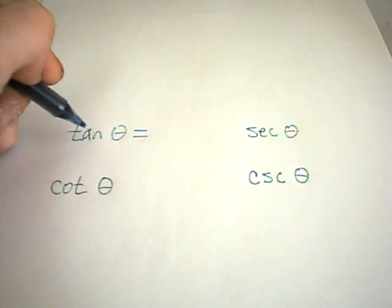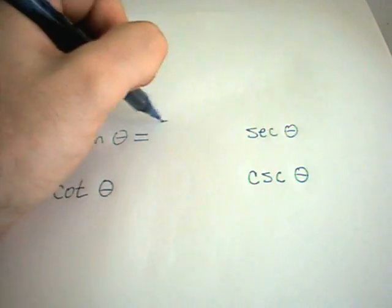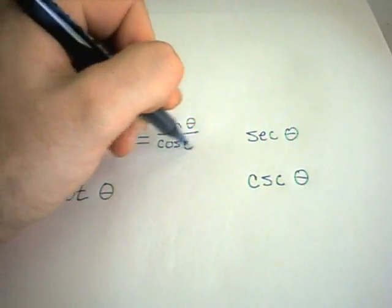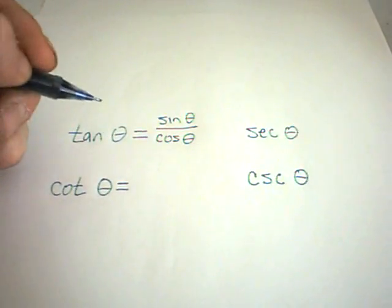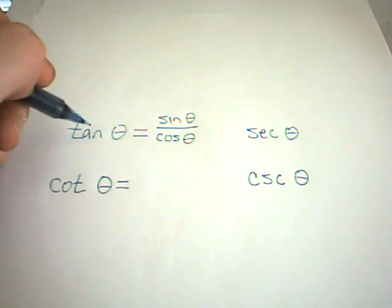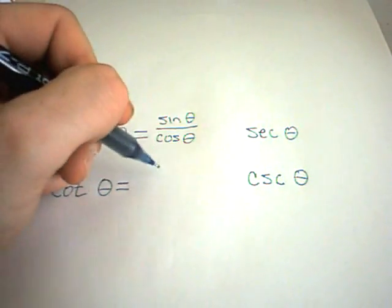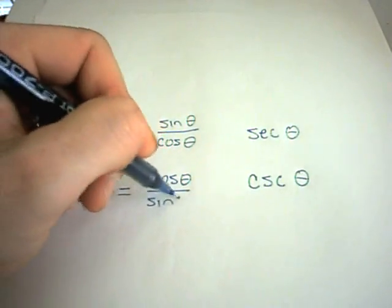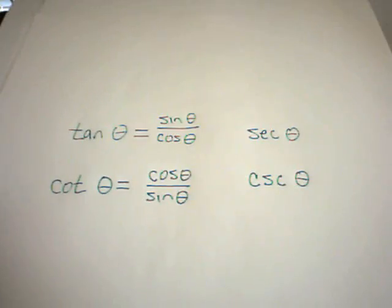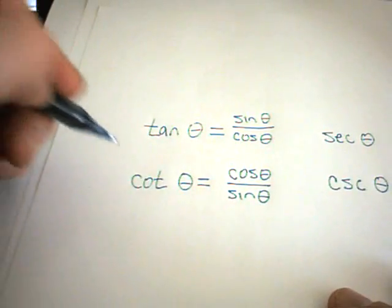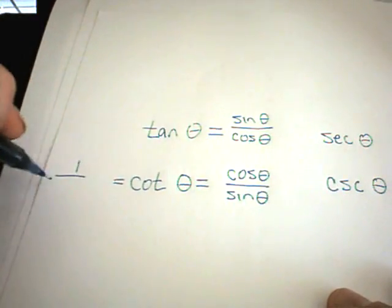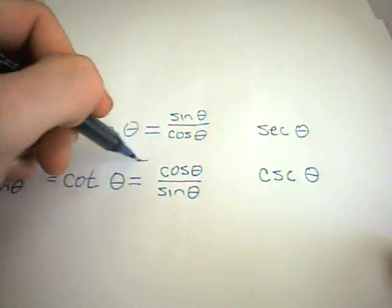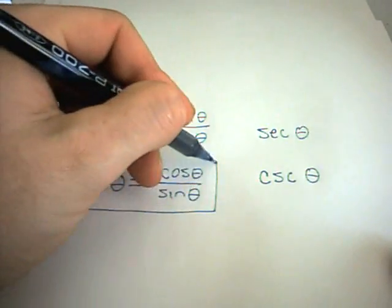Tangent of theta is simply defined to be sine of theta divided by cosine of theta. Cotangent of theta is one over tangent, or equivalently cosine of theta over sine of theta. Likewise cotangent can be defined to be one over tangent of theta, but I tend to think of it as just cosine over sine.